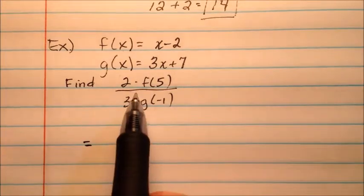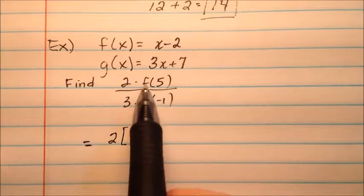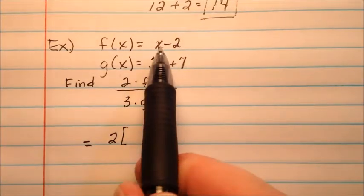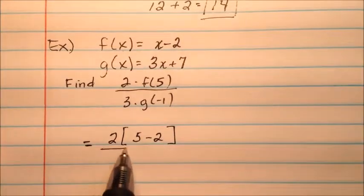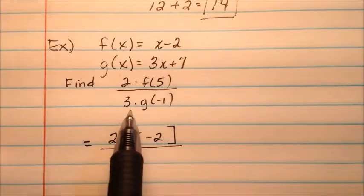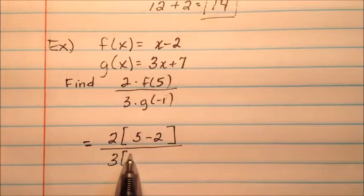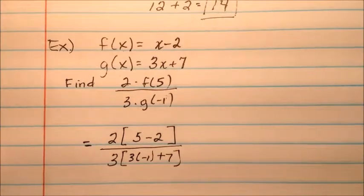We'll come down here, we'll say it's going to equal 2 times, and then f at 5, so we're going to evaluate f at the value of 5, so when you plug 5 in there, I'll get 5 - 2, all over 3 times, when I plug negative 1 in for g, it's going to be 3 times negative 1, and then plus 7.